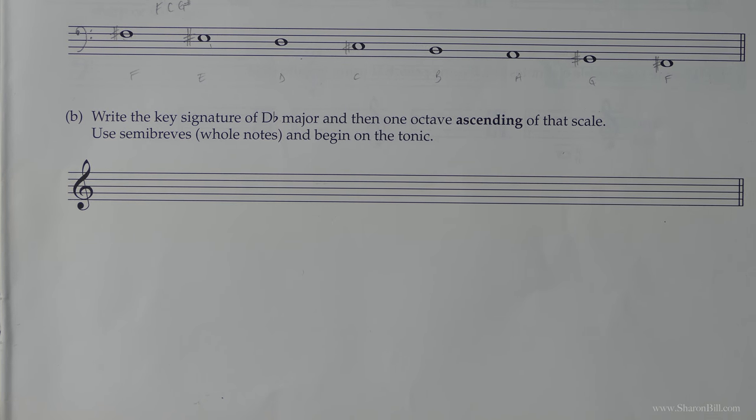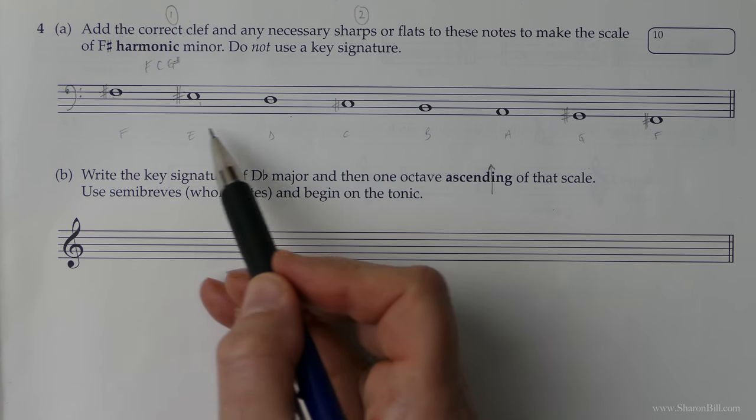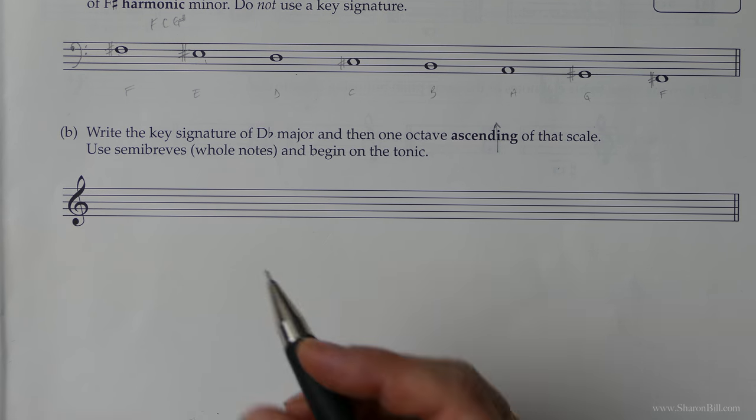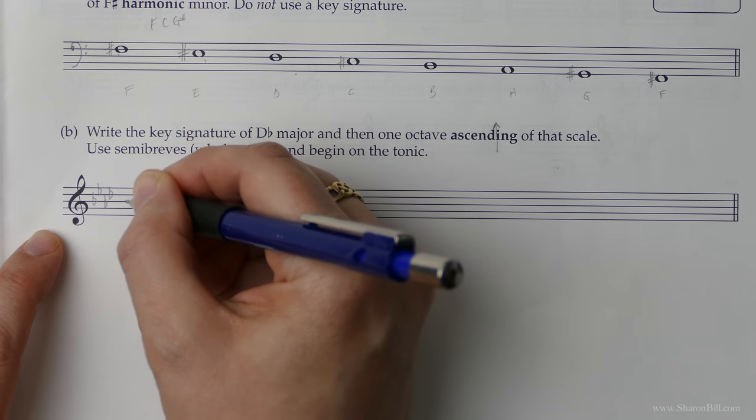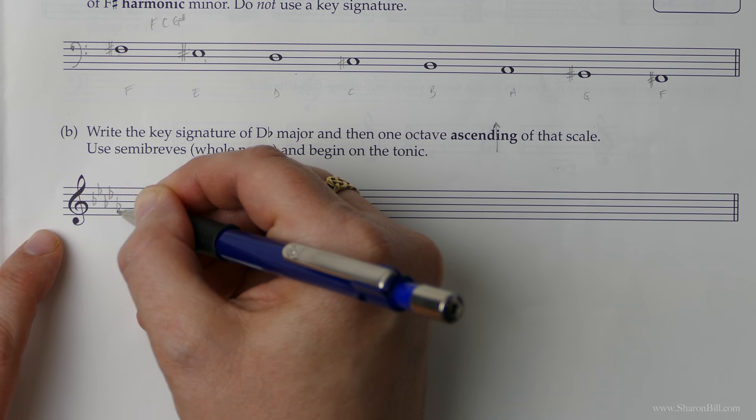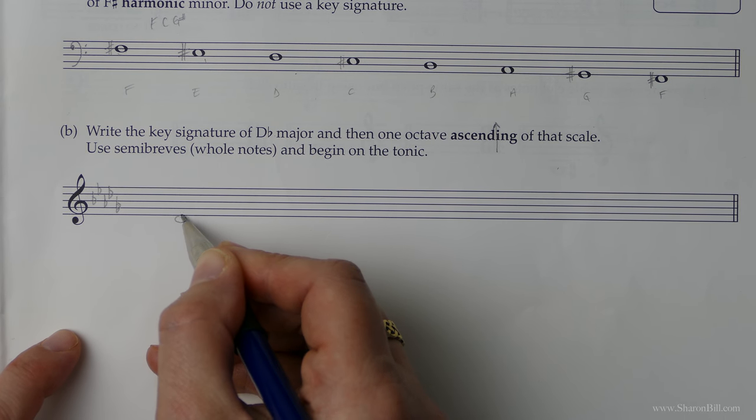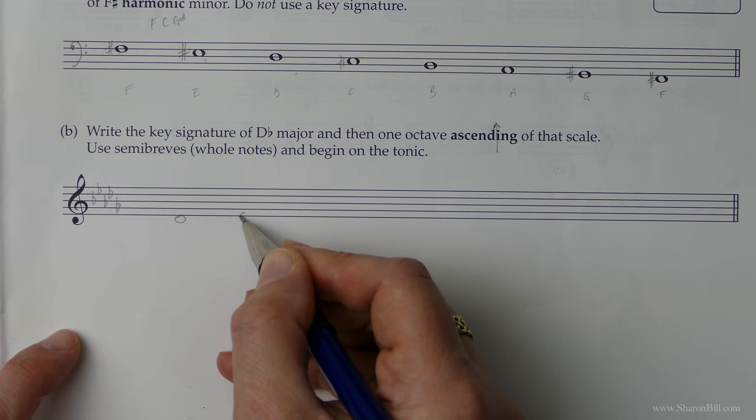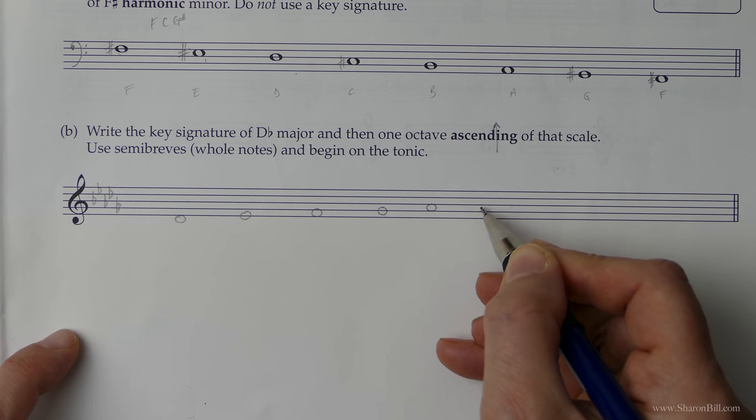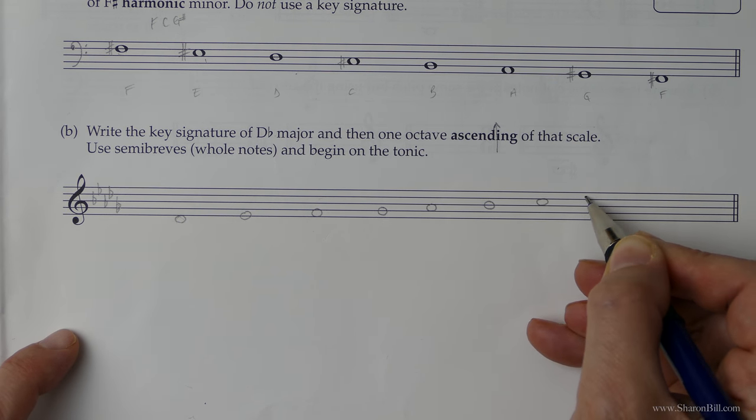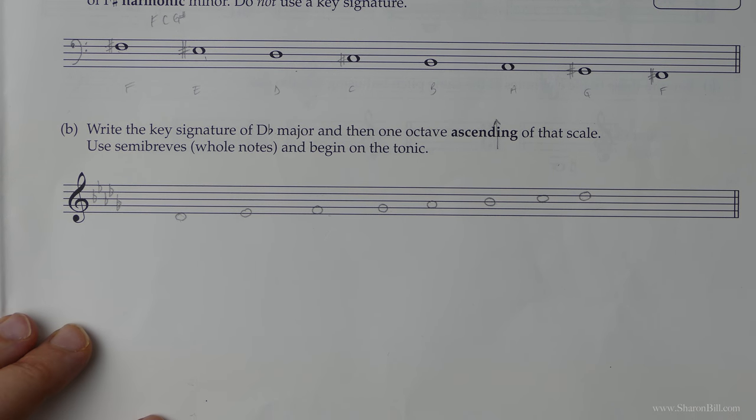Write the key signature of D flat major and then one octave ascending. We've got to do the blobs ourselves this time. Use semibreves or whole notes so there's no need to be worrying about stems. The key signature of D flat major, we've got B flats, E flats, A flats, D flats, and then you go one beyond the key note so we've also got G flats. Then we need to write one octave ascending. Make sure you're in treble clef. So we start here and if we're starting on a space: space, line, space. Make sure we're doing next door notes, don't miss any. Remember scale means step. We need to have every line and space accounted for. If we do eight that should give us to D. We've ended on D so we know that's accurate.